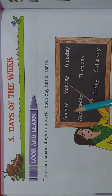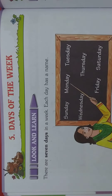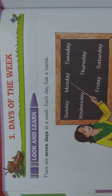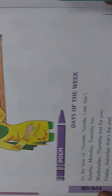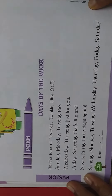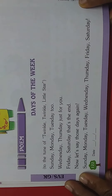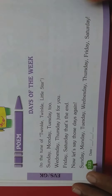These are the names of the week. There are 7 days in a week. Now we will see the poem on days of the week, in the tone of Twinkle Twinkle Little Star.